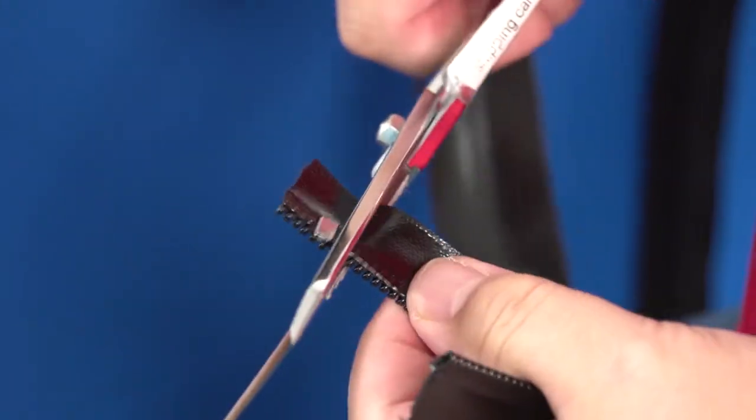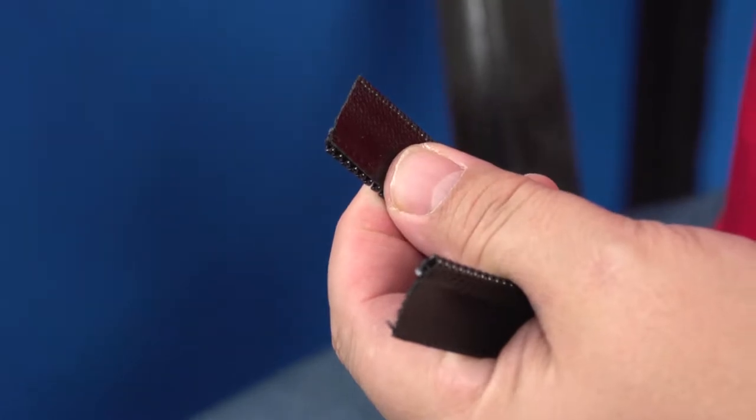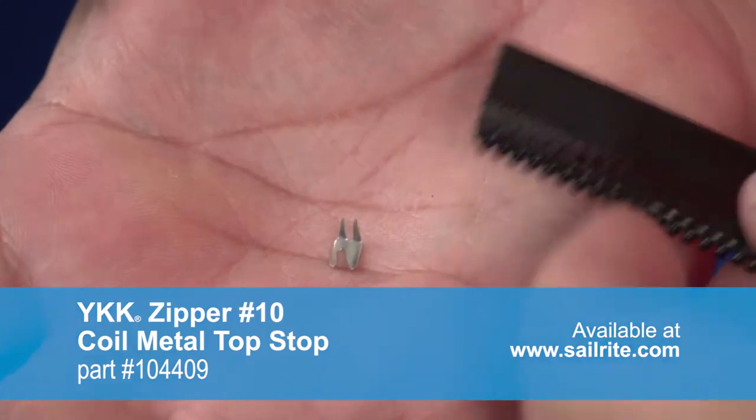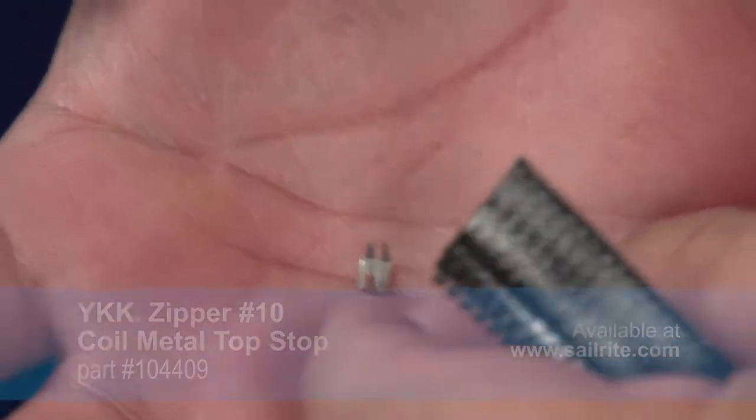Zippers can be cut to size and often a stop is used to keep the slider from coming off the end of the zipper. Sailrite sells metal top stops for number 10 coil zippers and number 5 size coil zippers.